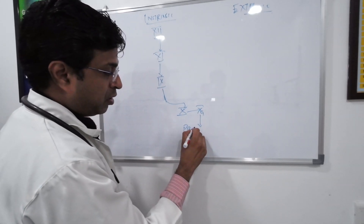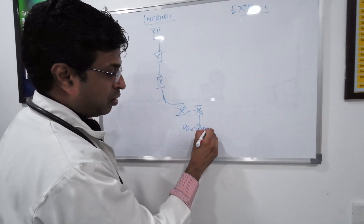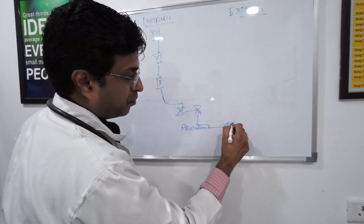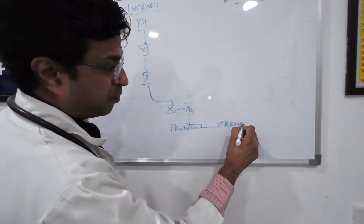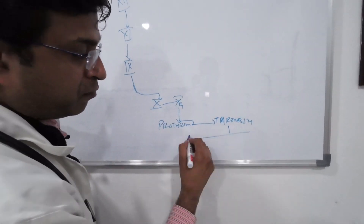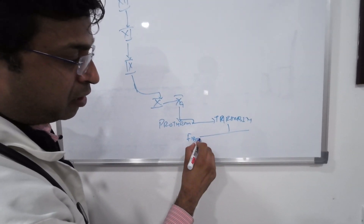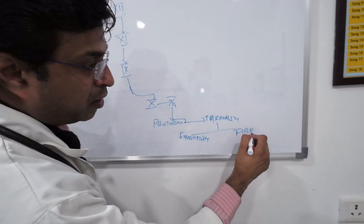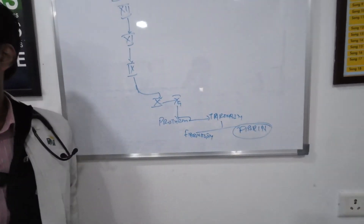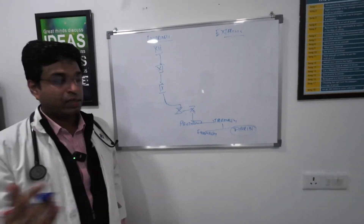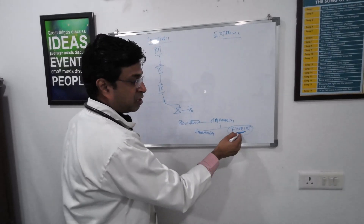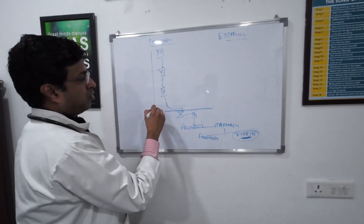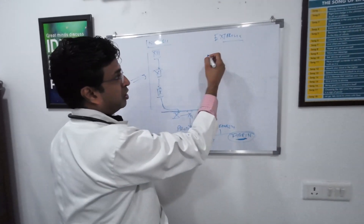Factor 9 activates factor 10, which gets converted into 10A. Factor 10A activates factor 2 (prothrombin), and prothrombin gets converted into thrombin. Thrombin then converts fibrinogen to fibrin. Ultimately we want to make fibrin — this is the plug formed at the blood vessel. From this point onward is the common pathway.